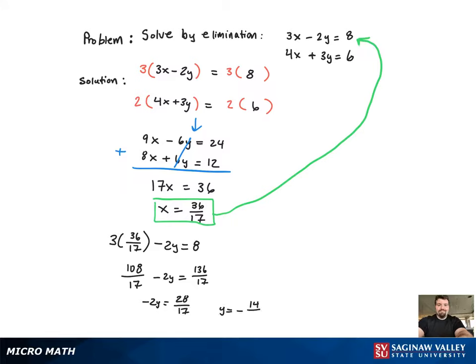And we get y equals negative 14 over 17, and now we can write the ordered pair solution. And the graph will be provided in the top right corner, and that's it.